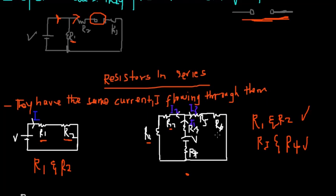Once you know this approach it becomes much easier. R5 and R6 have the same current I3 passing through them. When I1 splits into I2 and I3, current I3 passes through R5 and R6 and then converges back to become I1 at the voltage source. Similarly, I2 passes through R1 and R2, then converges with I3 to form I1 again.